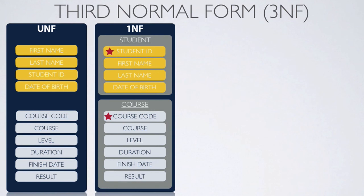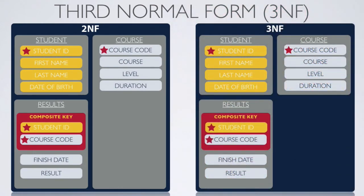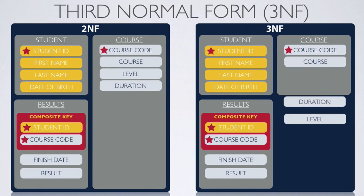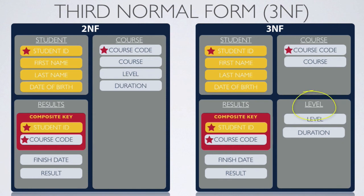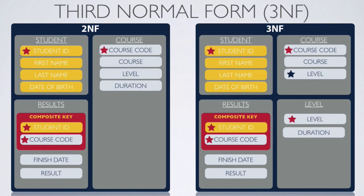Finally, we move on to our third normal form, where all key attributes must depend only on the primary key. Looking at the second normal form, we move any attributes not fully dependent on their table key into their own table. The module duration is dependent on the level, so it's not fully dependent on the key. Therefore, level can be moved to an independent table with level as the primary key — stage one, stage two, and stage three are all unique. Then, to reference the level within the course table, we create a foreign key, and this foreign key maintains the relationship and the data link.